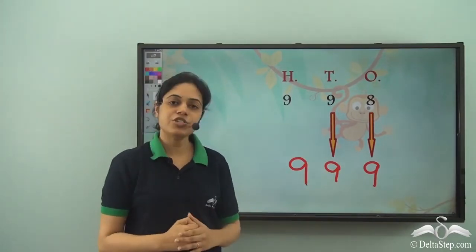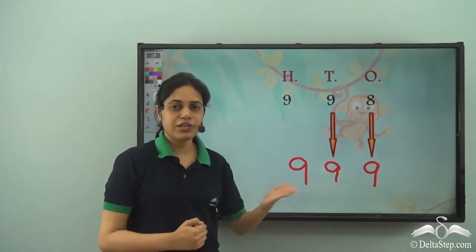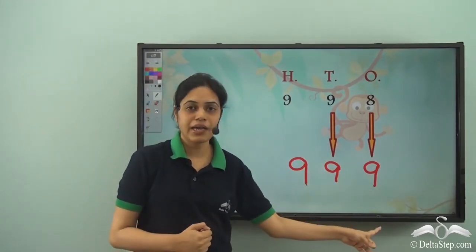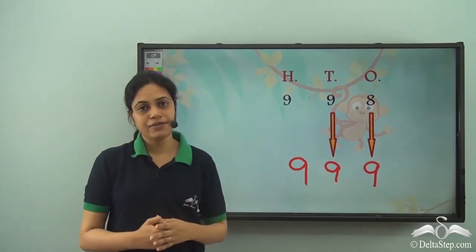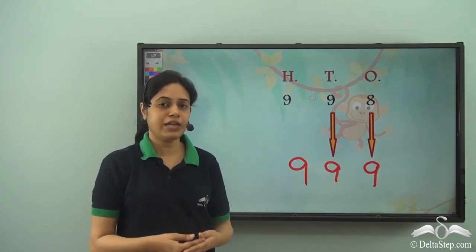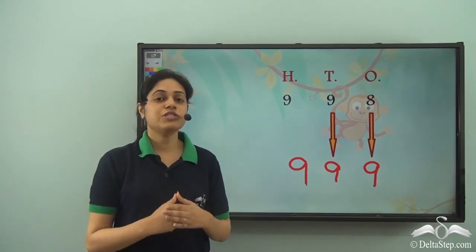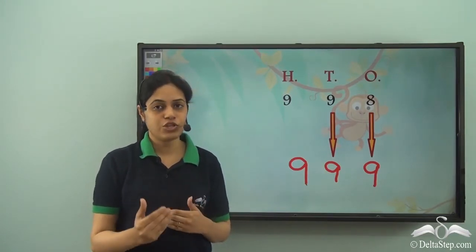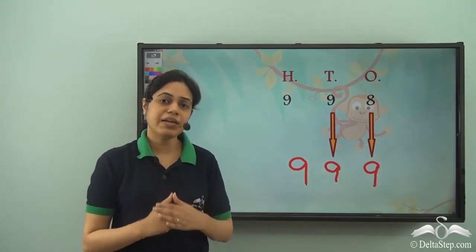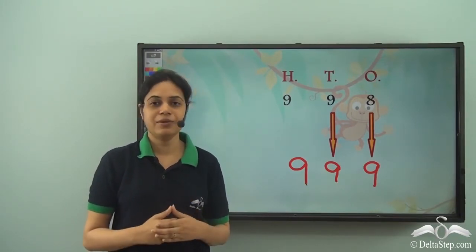This is also a 3 digit number. So 999 is the largest 3 digit number we can have because there are 3 nines. Now what about the number after that? Well, there are numbers after that as well but we will learn them later. So these were the different 3 digit numbers. So starting from 100 till 999. So there are many many 3 digit numbers. So write down all the numbers and practice them and learn them all.